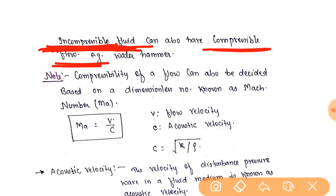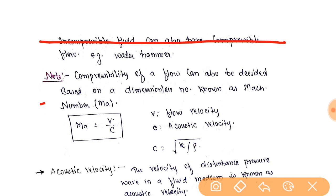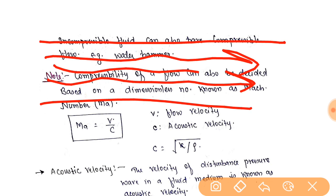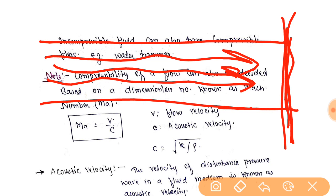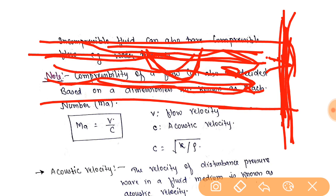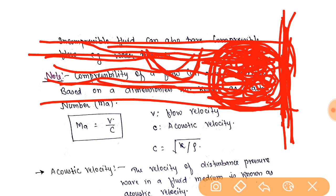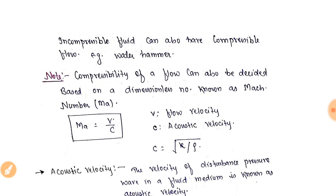An incompressible fluid can also have compressible flow. For example, the water hammer effect. When a liquid is flowing through a pipe with a gate, and the gate is suddenly closed, the fluid velocity suddenly hits the gate and returns. At that point the pressure increases greatly, causing the volume of the fluid to decrease. This is called the water hammer effect.